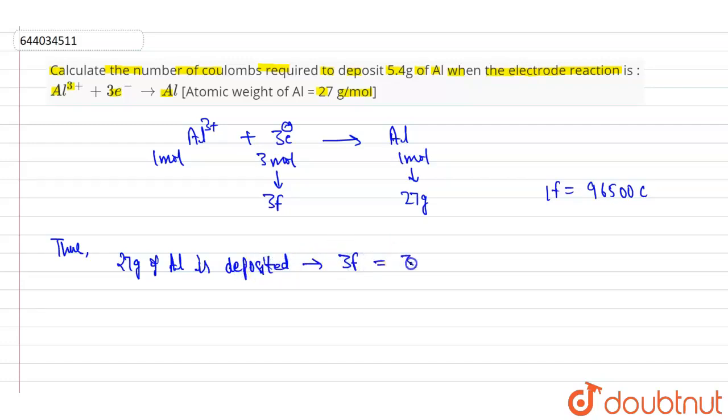Therefore, 5.4 grams of aluminium is deposited by 3 faraday charge divided by 27 and multiplied by 5.4 grams.